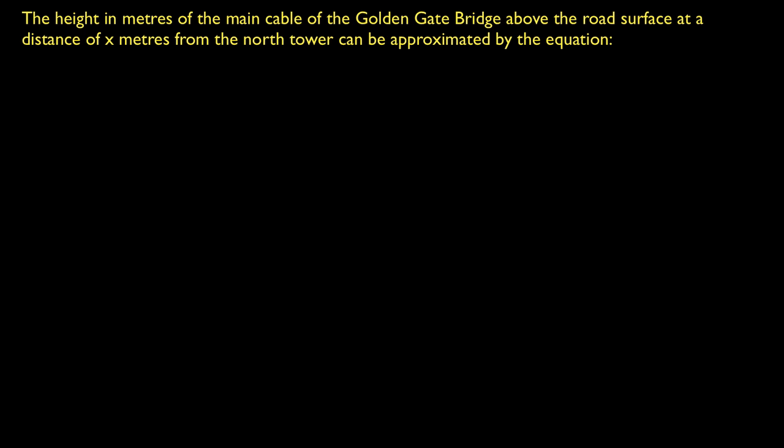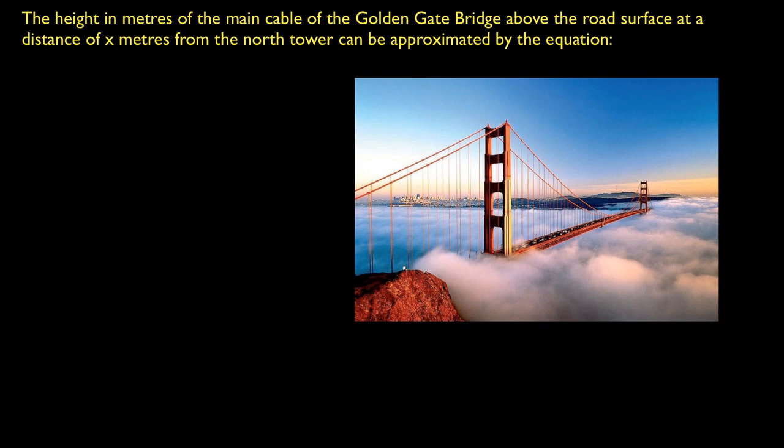This math talk is yet another application of quadratic optimization, and it looks at the height in meters of the main cable of the Golden Gate Bridge above the road surface at a distance of x meters from the north tower, and it says that it can be approximated by the equation h equals 19 over 51,200 x squared subtract 19 over 40 x plus 155.